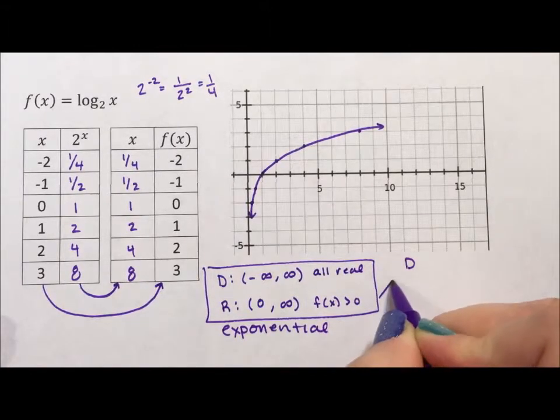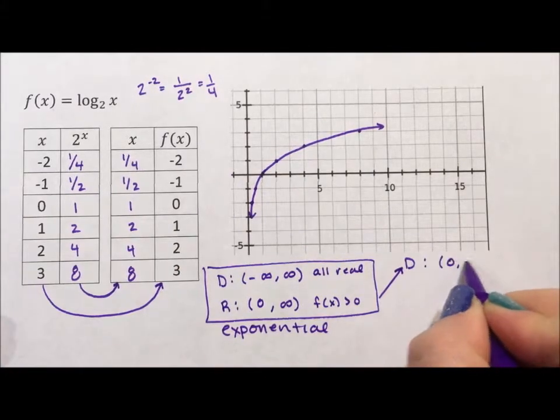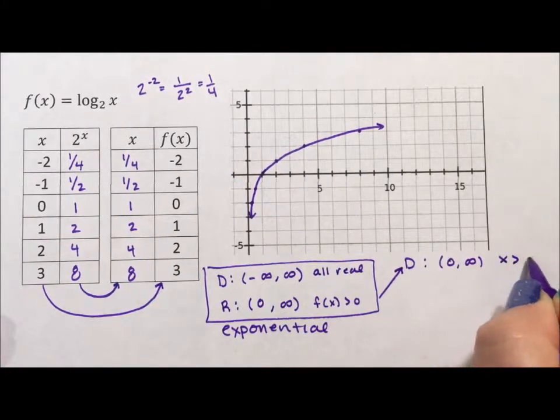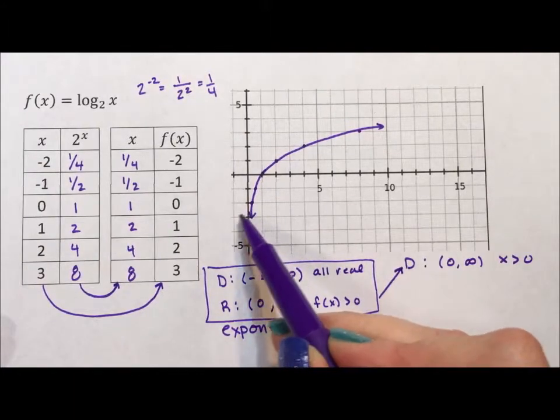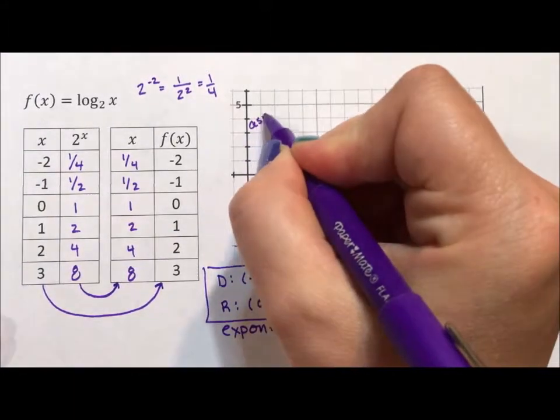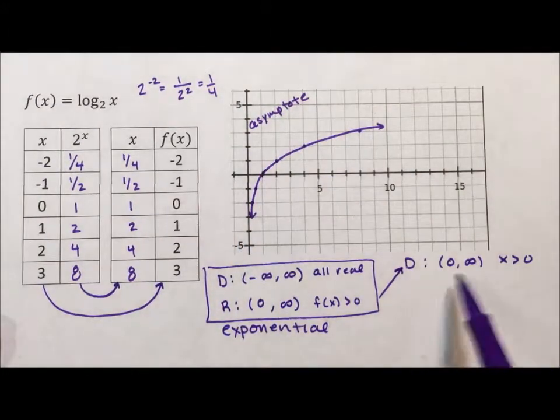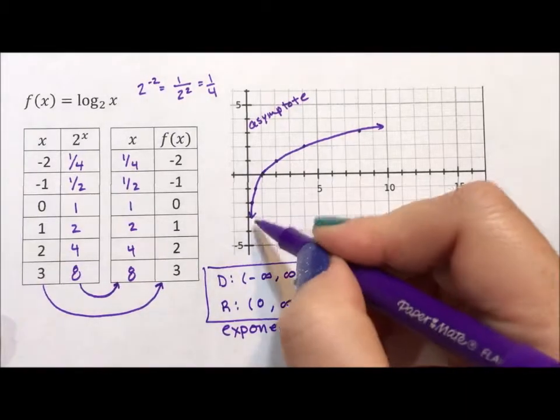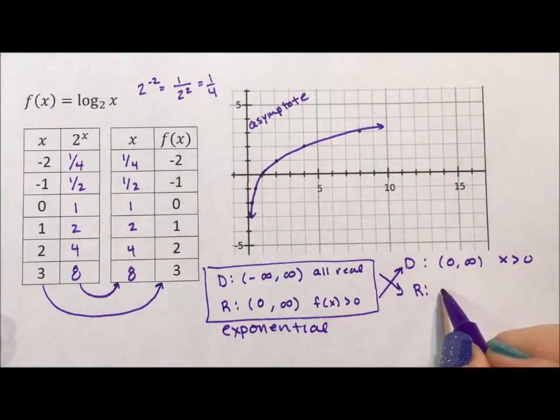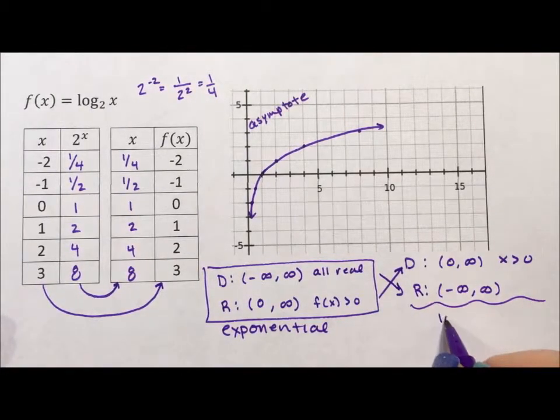The domain of the log, and we can see it, my x values, are 0 to infinity or x is greater than 0. It doesn't ever touch the y-axis. It doesn't cross it. This becomes an asymptote, a barrier that cannot be crossed. And my range goes forever down and up. My range is all real. So this is for the log.